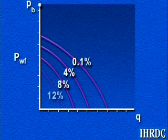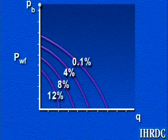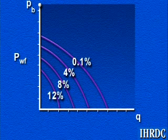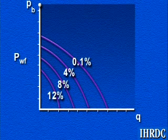The result is a progressive deterioration of the IPR. The values on the lines reflect the percentage of reserves produced.